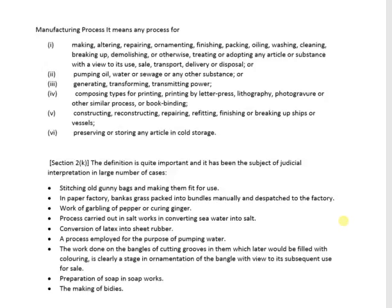You may go through all of them for knowledge — you don't need to remember all of them. For example, preparation of soap in a soap works was held to be a manufacturing process. The making of berries was held to be a manufacturing process. Work of garbling of paper, curing ginger, work in paper factories — all had been held to be manufacturing.